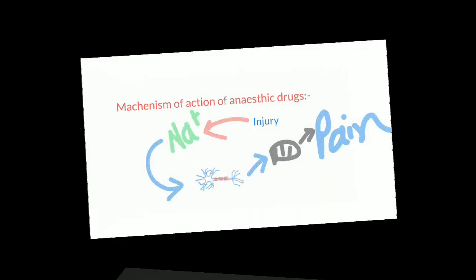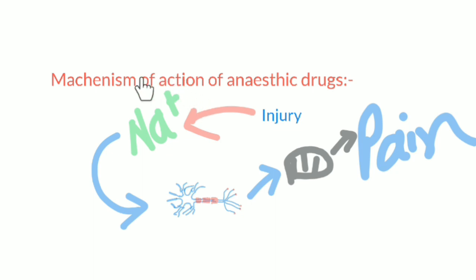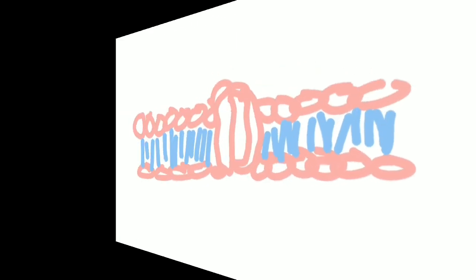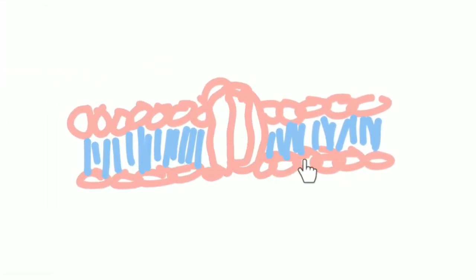All anesthetic drugs act by inhibiting the entry of positively charged sodium and calcium ions into the nerve cell, so that the signals are not transmitted to the brain and we do not feel any pain. They inhibit sodium and calcium ions by different mechanisms. This is a small part of the cell wall of the nerve cell, and there are different receptors present on the nerve cell.